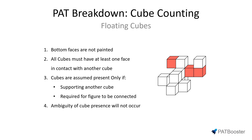Rule number three states that cubes are assumed present only if they are supporting another cube or if they're required for the figure to be connected. As mentioned in the first video, this rule is specific to hidden cubes, because those are the ones we need to make assumptions about. Floating cubes and the spaces underneath them are directly visible, so we'll never have to make additional assumptions about them. We can evaluate the figure as presented and make assumptions only on hidden cubes.